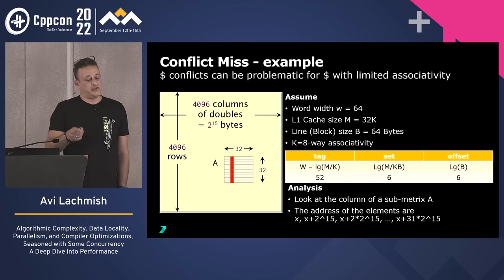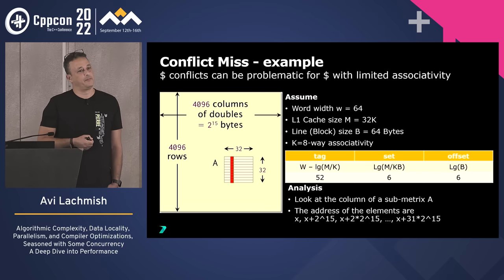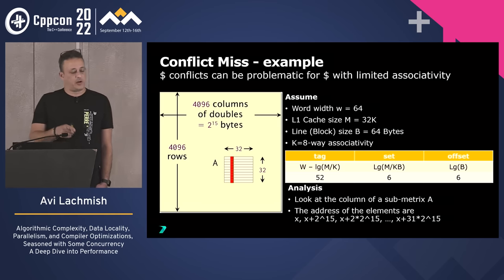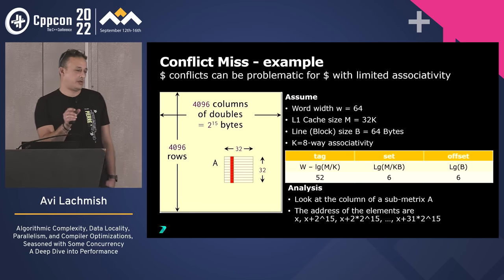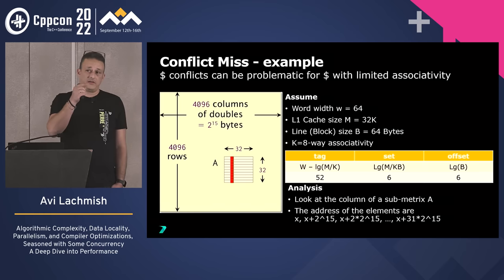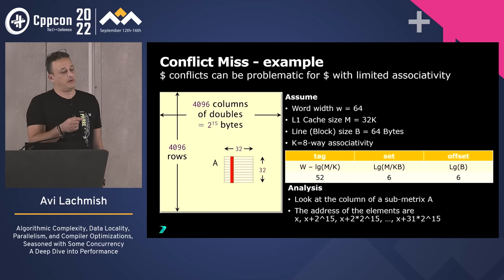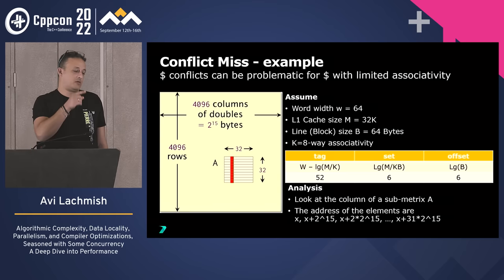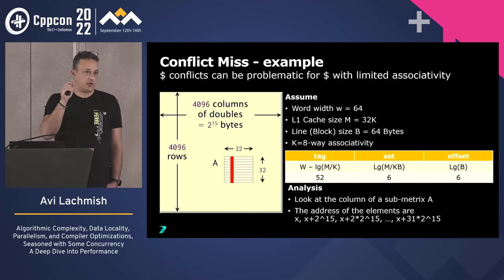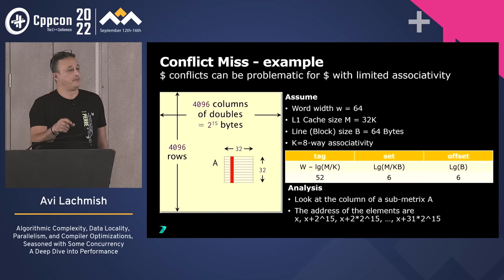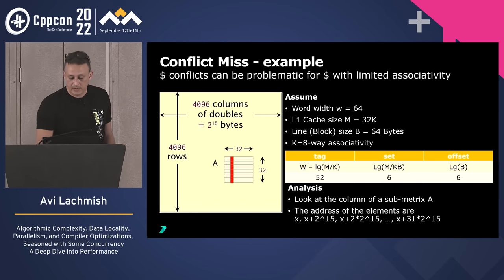The tag changes because we increment by 2^15, which is 15 bits. This means each successive element maps to the same set. With 8-way associativity and iterating over 32 values, after 8 elements the set is full. The 9th element forces an eviction from that set — a conflict miss. Let me show an example of that.